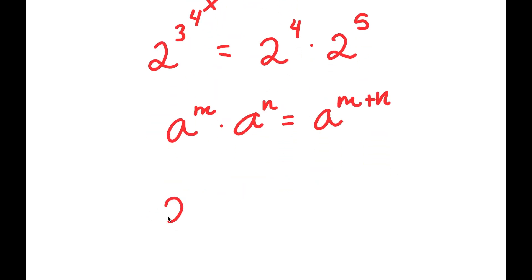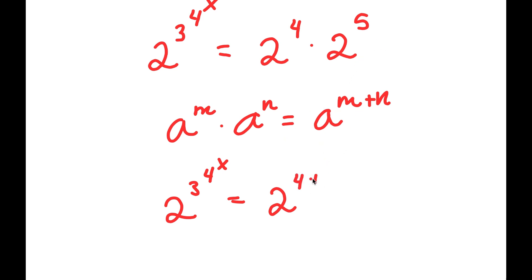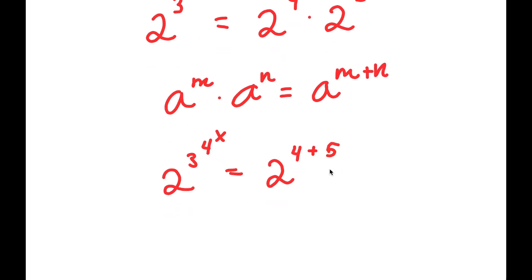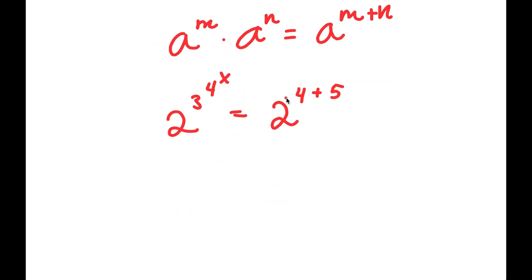So right here we have 2 to the power of 3 to the power of 4 to the power of x is equal to 2 to the power of 4 times 2 to the power of 5, which is the same thing as 2 to the power of 4 plus 5. And 4 plus 5 is equal to 9. So 2 to the power of 3 to the power of 4 to the power of x is equal to 2 to the power of 9.